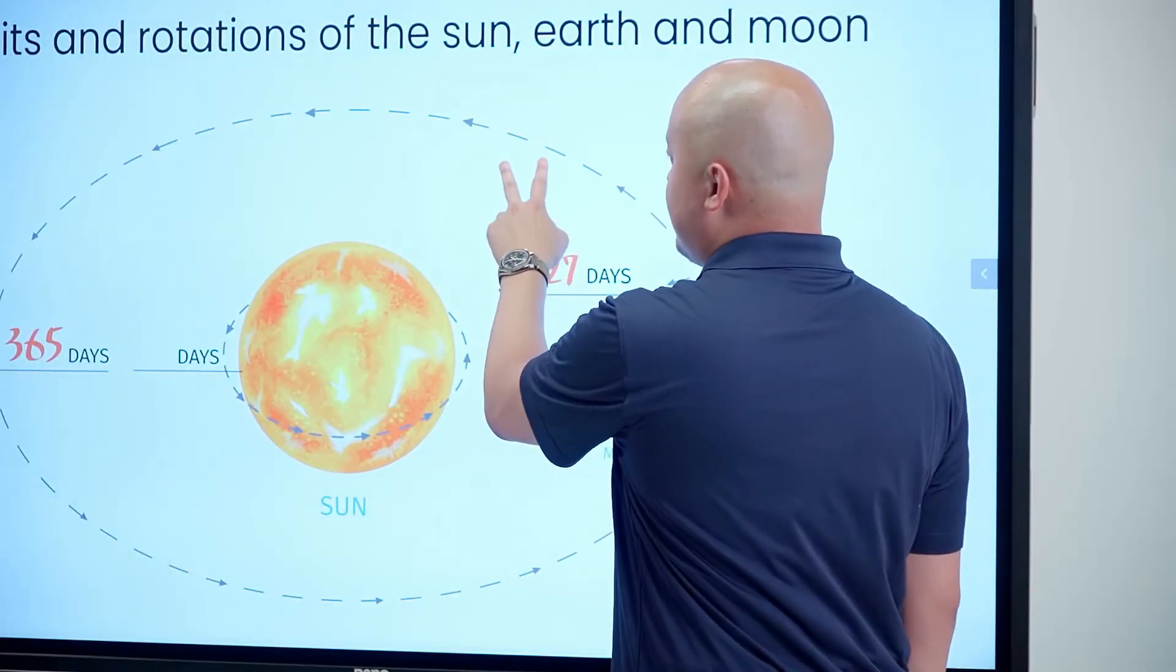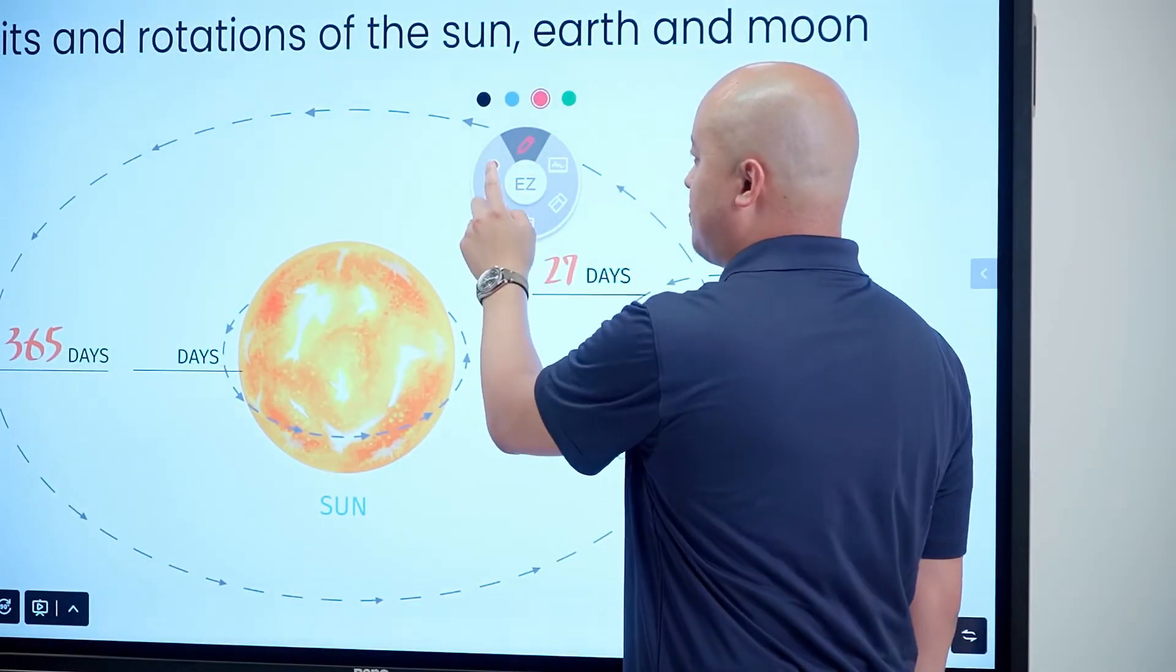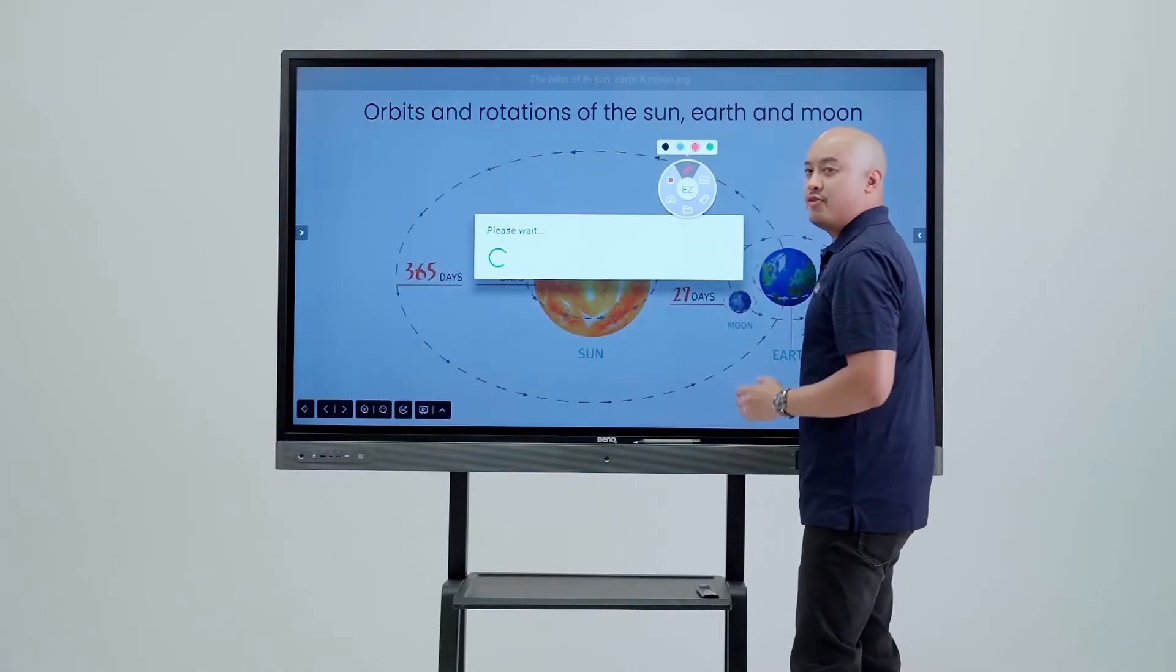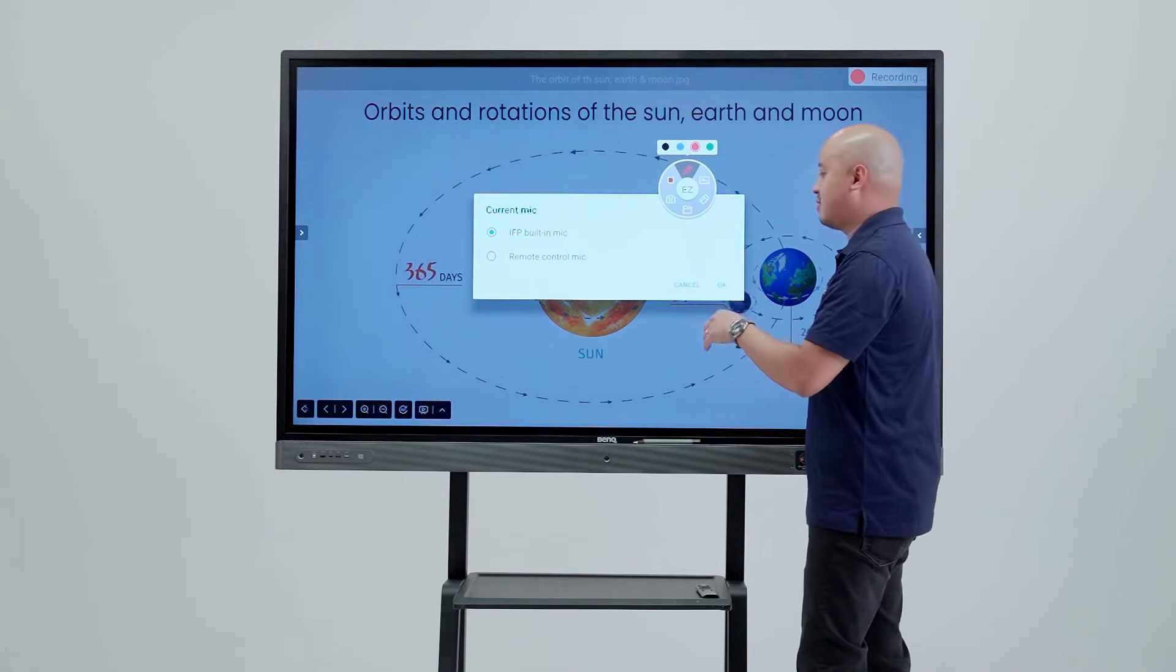All we have to do is activate the EasyWrite floating tool and press the red record button. From here we'll receive a prompt asking if we want to use the microphone. I'm going to say okay.